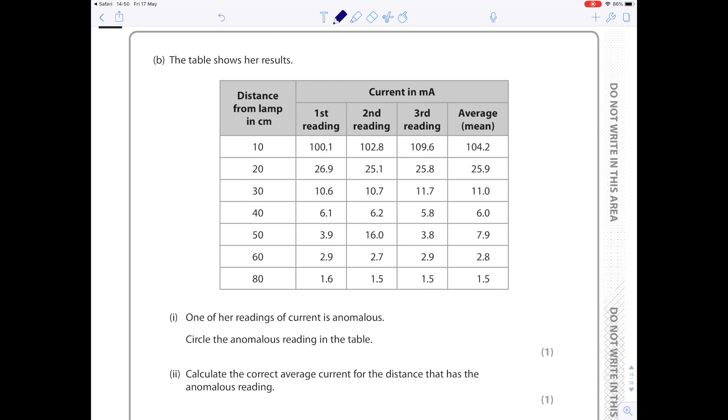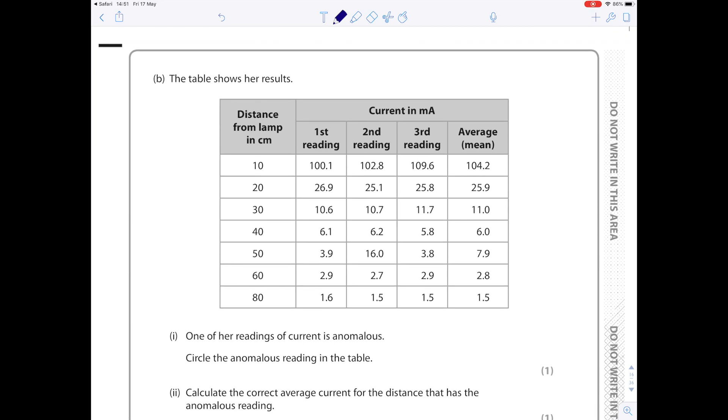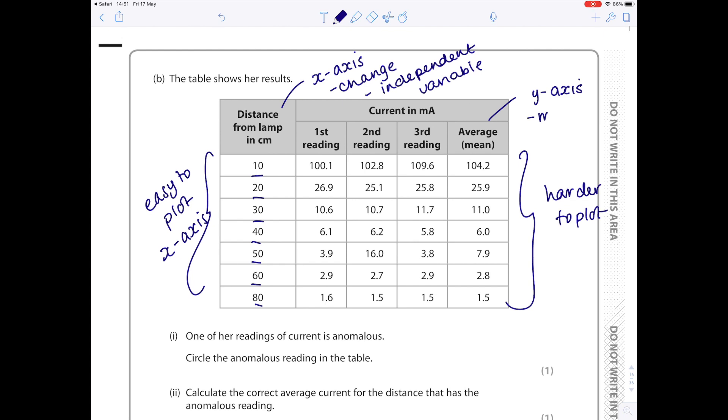Let's double check that we're happy drawing graphs here. So we've been given a results table here, and below we're going to be asked to draw a graph. So how do you know what we draw on the x-axis and what we draw on the y-axis? So the x-axis is the thing which is easier to plot, and it's the thing that we change, which is therefore the independent variable. The y-axis we're going to be plotting the average results. So the y-axis is the thing which is harder to plot. It's the thing that we're measuring, and therefore it's the dependent variable which goes on the y-axis.